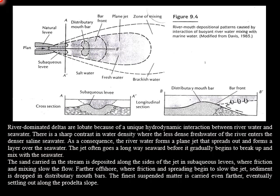Deposition starts as soon as the river water enters the sea, because of the sharp contrast in density between freshwater and saltwater. Near the river mouth, a subaqueous levee is formed as shown in the cross section. Beyond this, a distributary mouth bar forms a mound of sediments.